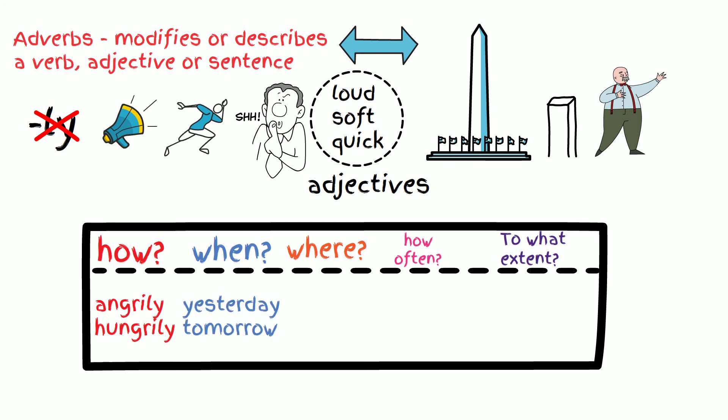The second part of the chart answers when something occurred, and as you can see in the chart, the words yesterday and tomorrow are adverbs. It answers the question of when something occurred. Let's try with a sentence. It rained heavily yesterday afternoon. When did it occur? Yesterday.